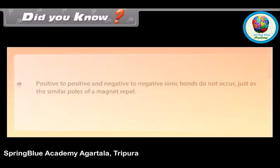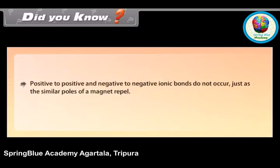Did you know? Positive-to-positive and negative-to-negative ionic bonds do not occur, just as the similar poles of a magnet repel each other.